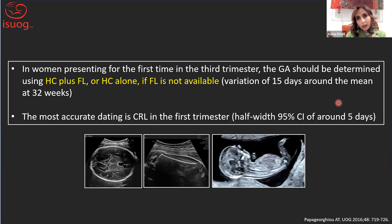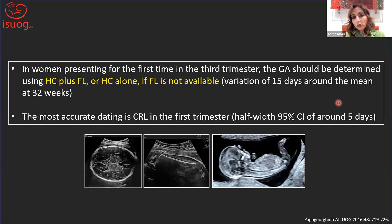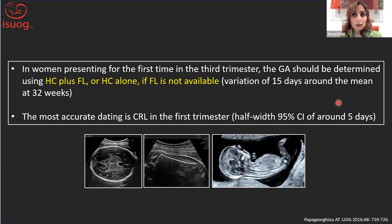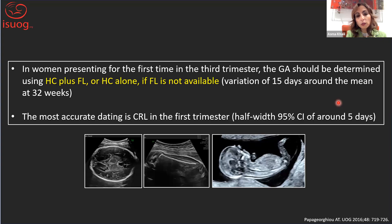Later in pregnancy, when the head is quite low in the pelvis, it can be difficult to get an accurate measurement of the head circumference or biparietal diameter. Even using head circumference, there is a variation of about 15 days around the mean at 32 weeks. Therefore in my own practice, we tend to bring the patient back in about a couple of weeks to make sure we don't miss a growth-restricted baby.